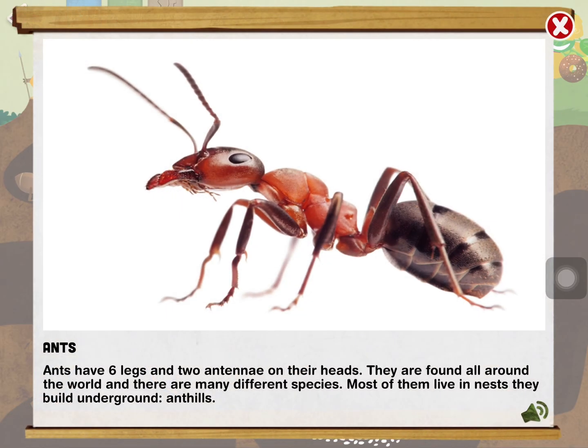Ants have six legs and two antennae on their head. They're found all over the world and there are many different species. Most of them live in nests they build underground.